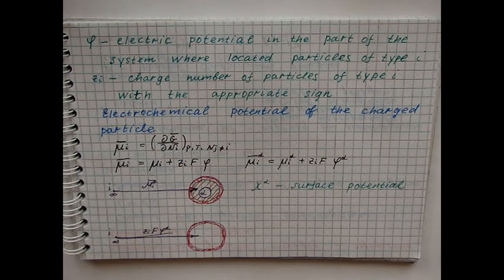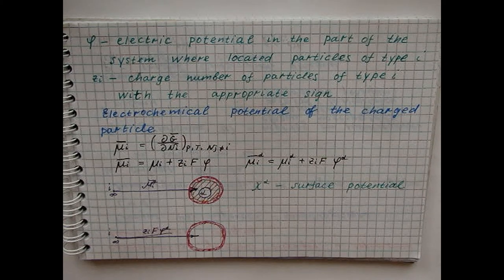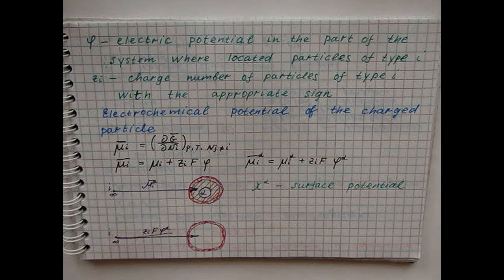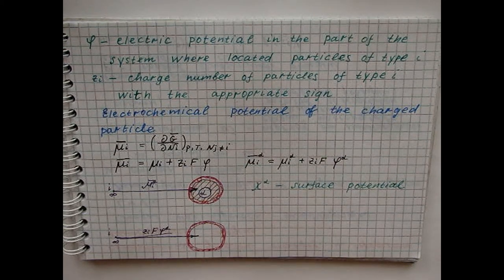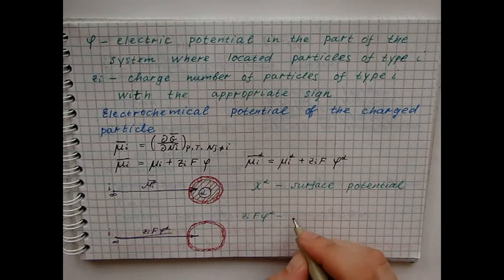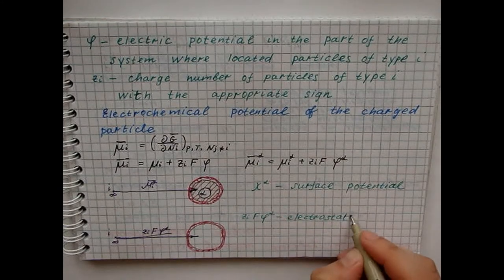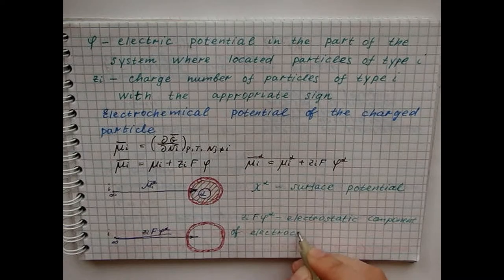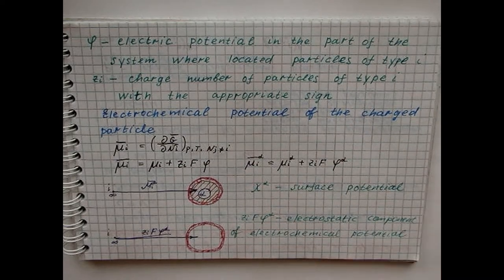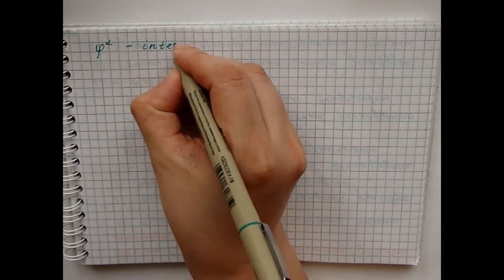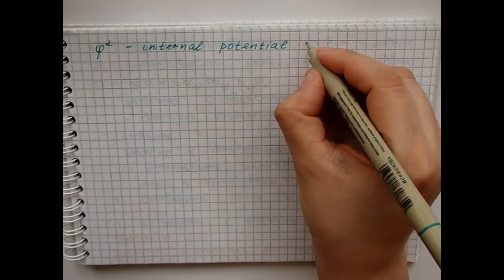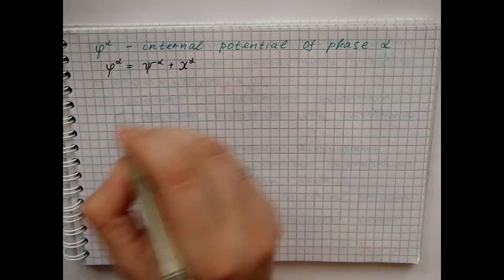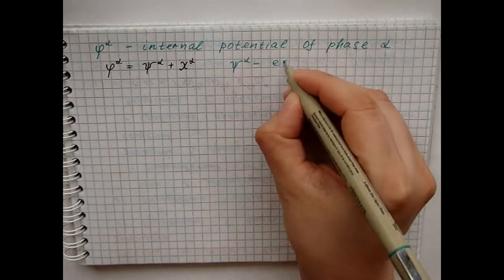If a charged particle from infinity is introduced into the empty charged shell and the work expanded is multiplied by Avogadro's constant, we obtain the electrostatic component of the electrochemical potential. The value is called the internal potential of the alpha phase. The internal potential is the sum of the external potential due to the free electrostatic potentials of the alpha phase and surface potential.